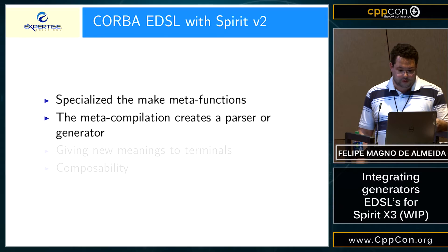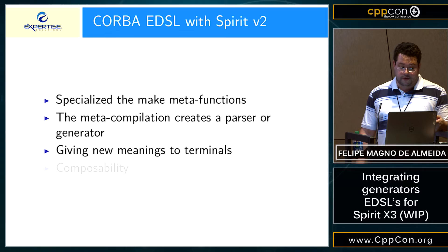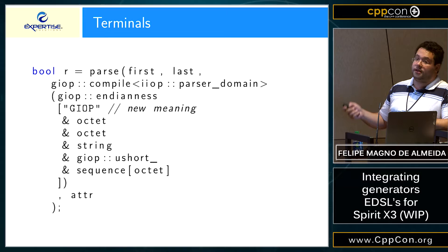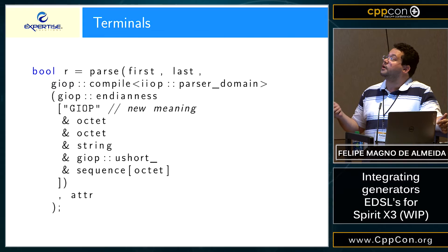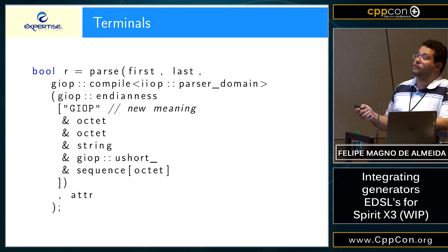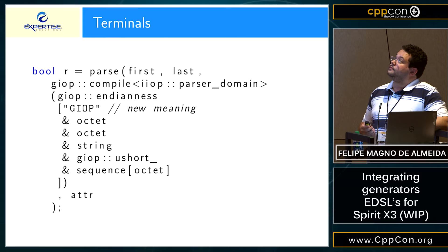It creates a parser or a generator by calling the meta-compiler of Boost Spirit V2. This allows us to give new meanings to terminals. For example, that 'GIOP' const char array — a C string — has a different meaning inside this compile than it does directly in Karma or in Boost Spirit Chi. Since we are going to compile that through our domain, we can change the meaning of that GIOP because make_terminal for this const char is going to be called on our domain. So we can change the meaning of any terminal however we want.